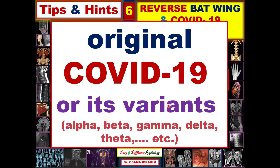Before we practice, don't forget that the original COVID-19 or its variants — alpha, beta, gamma, delta, theta, etc. — should also be considered in the diagnosis of the reverse batwing sign nowadays. This pandemic disease is considered the diagnosis until proven otherwise if you see a reverse batwing appearance on a frontal chest radiograph or HRCT. The key difference between COVID-19 and other differential diagnoses is that COVID-19 presents with acute onset — fever, shortness of breath, productive cough — while all the others have an indolent, chronic onset.